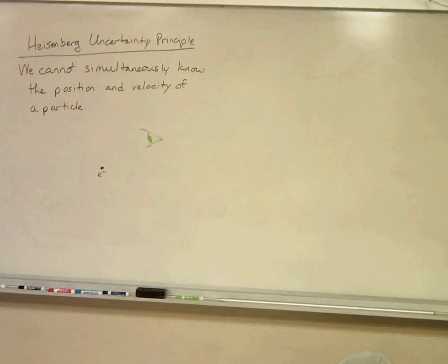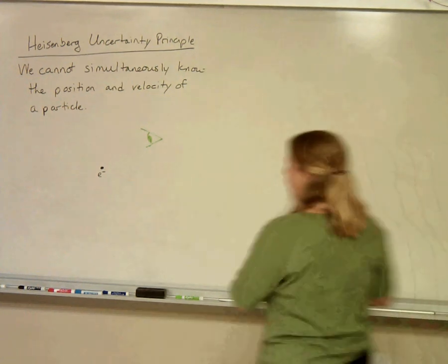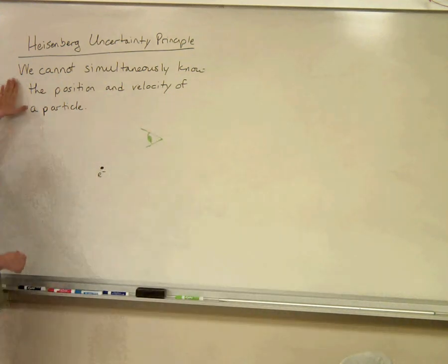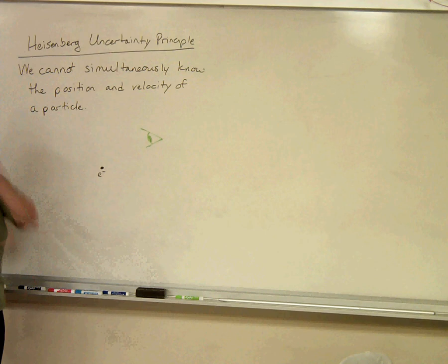Welcome to the Heisenberg Uncertainty Principle video. The Heisenberg Uncertainty Principle says we cannot simultaneously know the position and the velocity of a particle. You can know the position of it, or you can know the velocity of it, but you cannot know both at the same time.